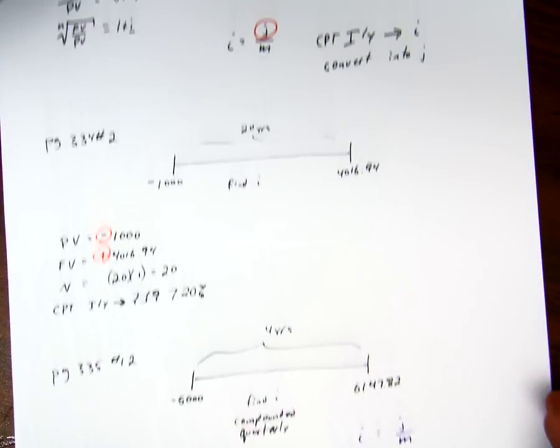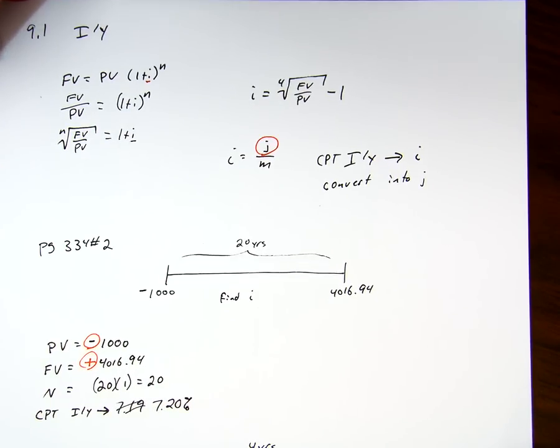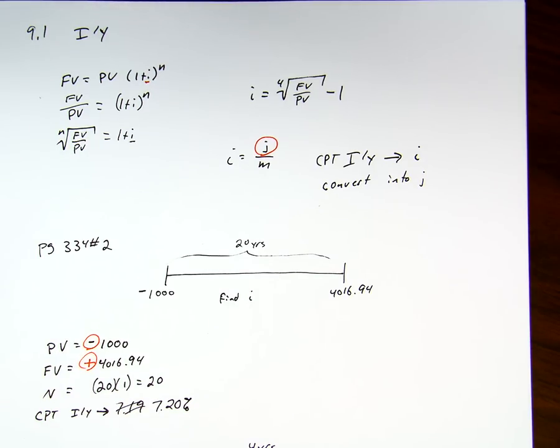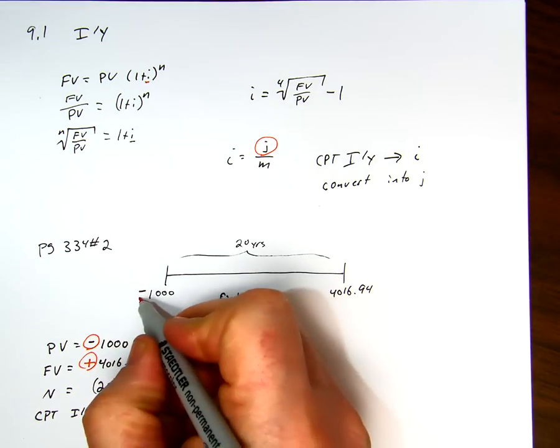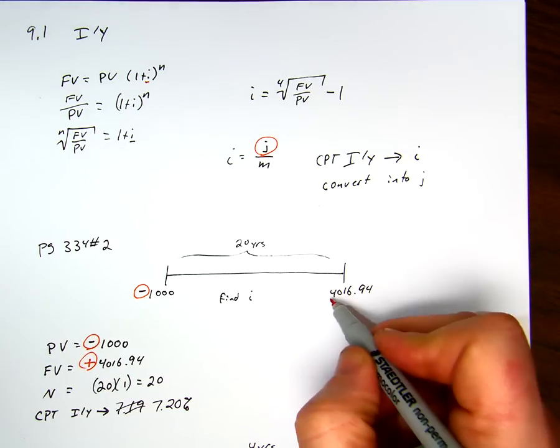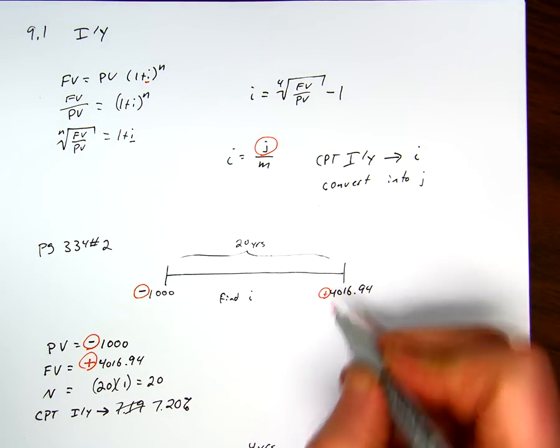So in review, section 9.1, it's really all about calculating i. i then gets converted into j for a nominal rate. And we do things exactly the same as we did before. The big thing is that one of these values, if you have a present value or future value, is negative and the other one is positive.